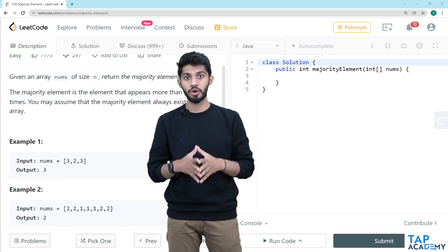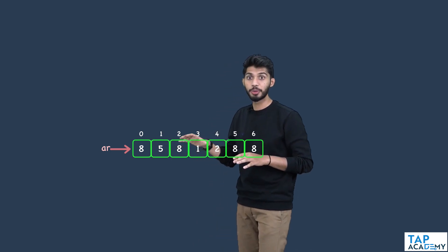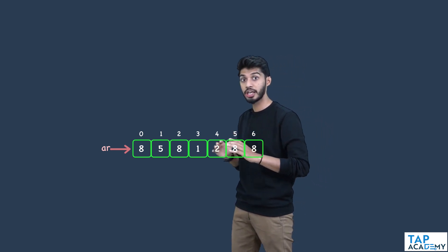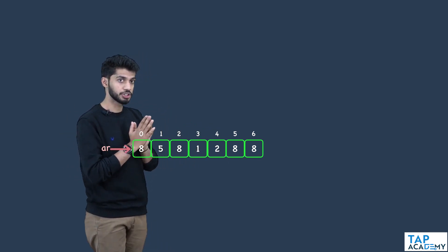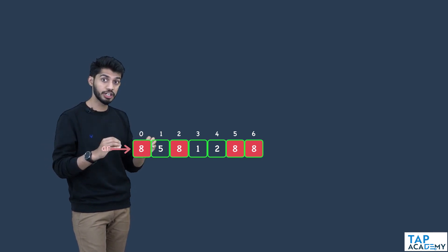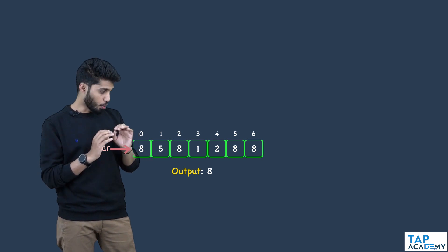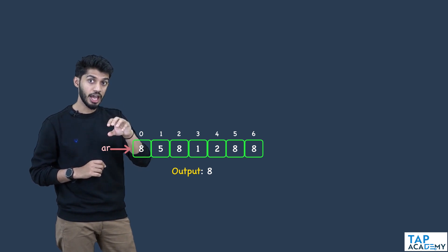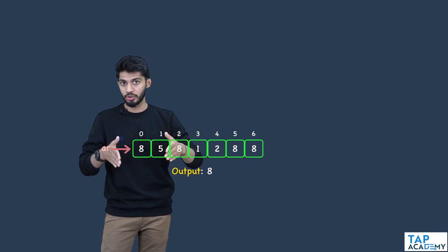Now let us try solving this problem. I have taken this array as an example. If you observe, there are 7 elements in this array. If there is any element which occurs more than 7/2 times, that element is the majority element and has to be returned. If you observe, 8 has occurred 4 times — more than 7/2 times — so definitely 8 has to be the output. The logic I will follow is: pick any one element from the array, count the number of times it has occurred, and if that count is greater than n/2, return it.